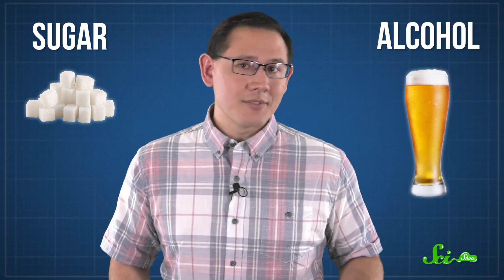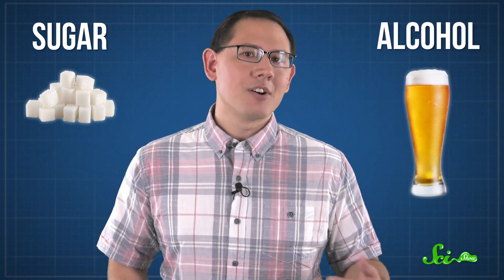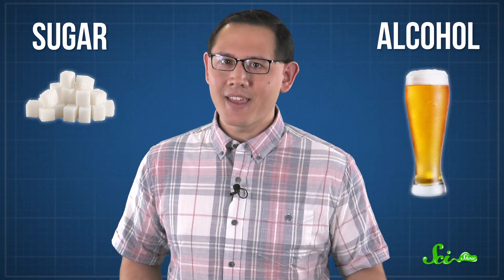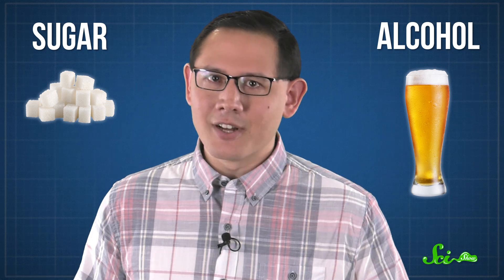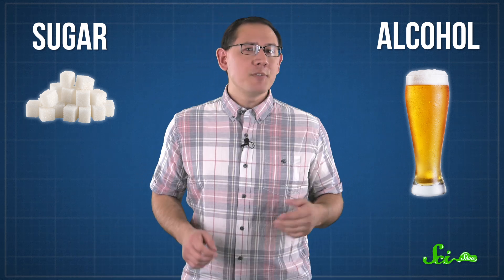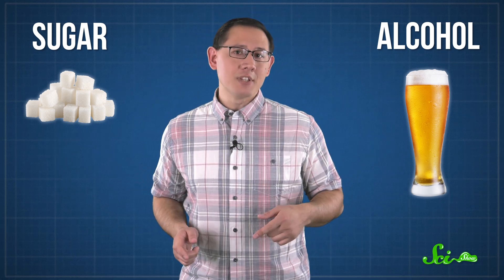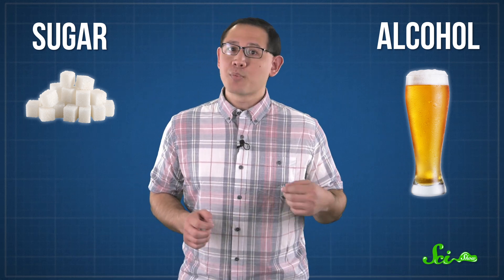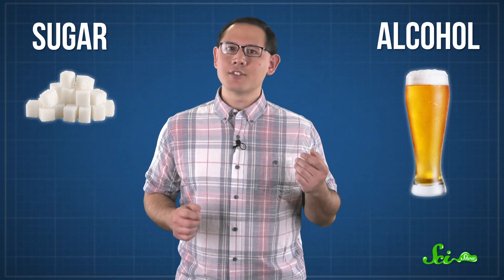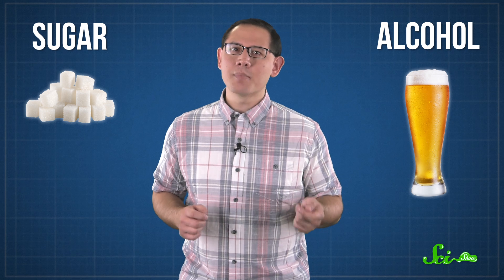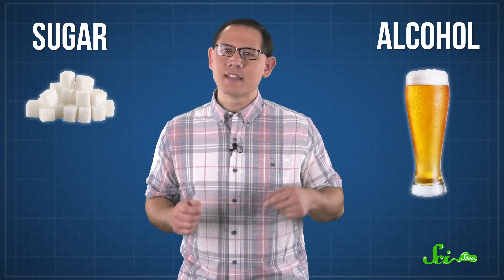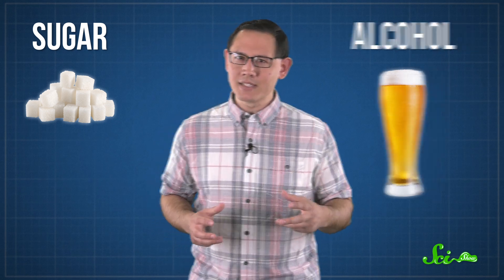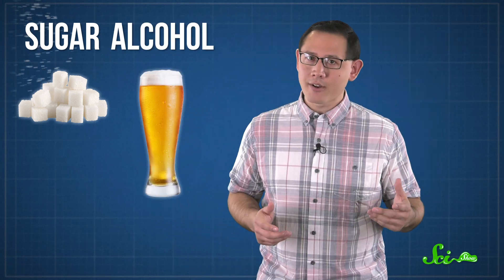And how about alcohol? If you're old enough to drink it, alcohol can be pretty okay, although it can turn on you pretty quickly. But if you've looked at a nutrition label lately, you've probably noticed that there's an ingredient showing up in a lot of foods that seems to combine these two—sugar alcohol.